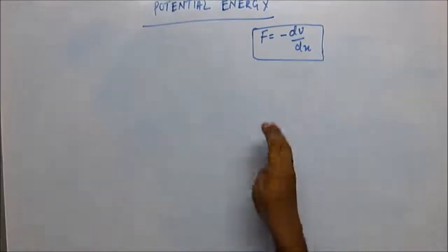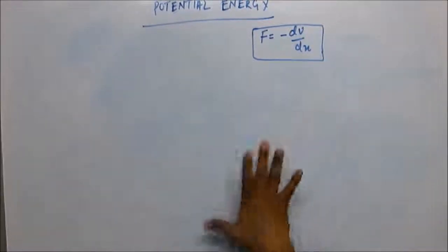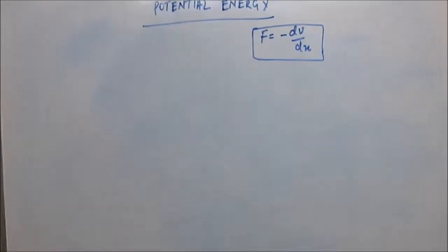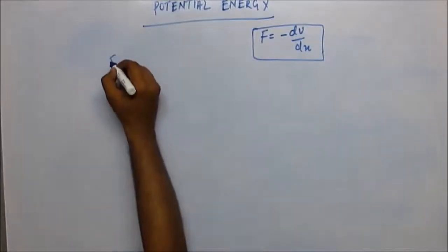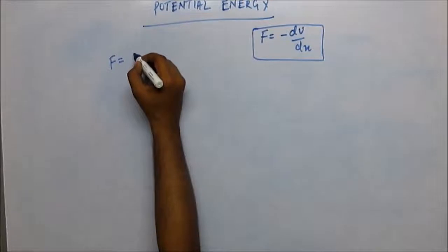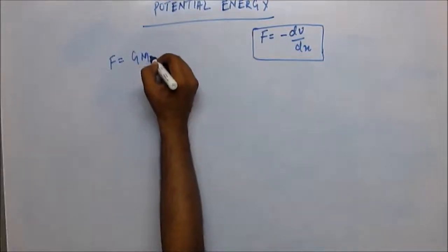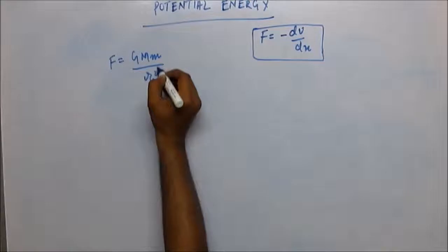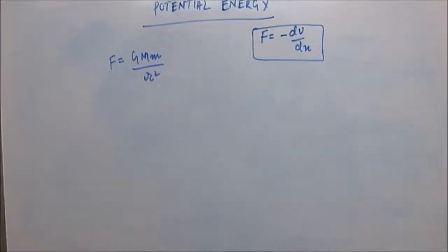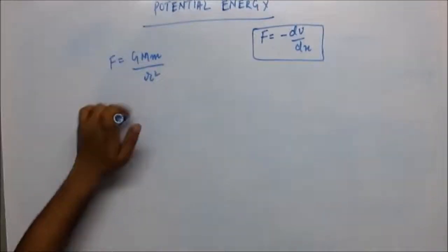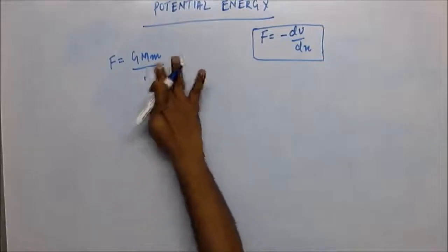Now we will check the validity of this and cross-verify certain equations. We have gravitational force F — gravitational force is GMm/r², where G is the gravitational constant, capital M is the mass of the earth, small m is the mass of the body, and r is the radius of the earth. This is valid when the body is very close to the surface of the earth.